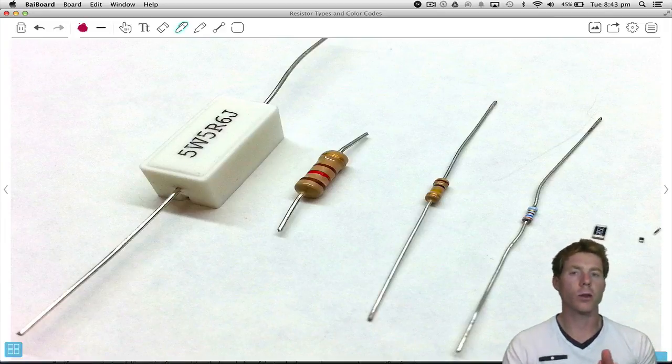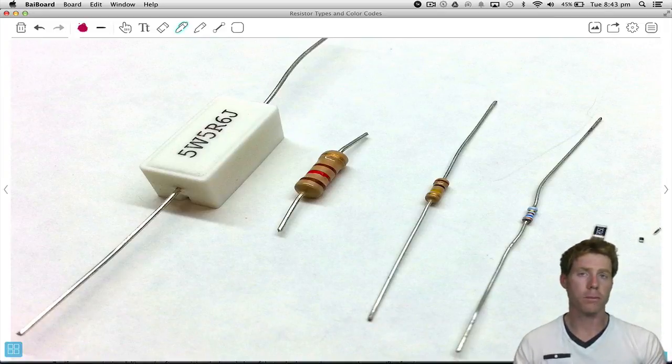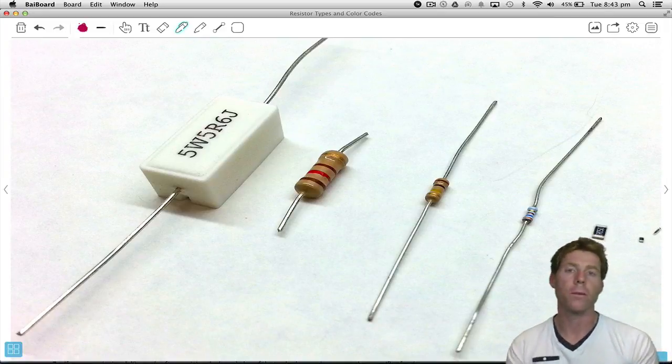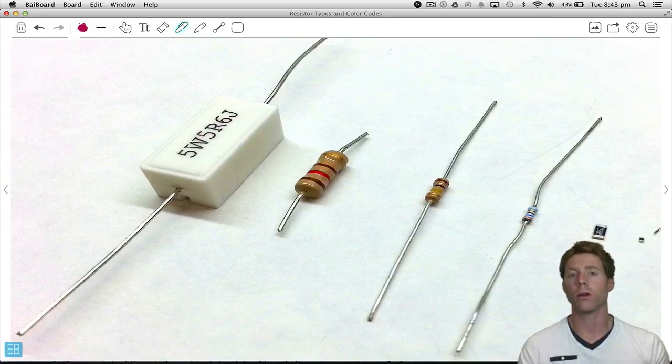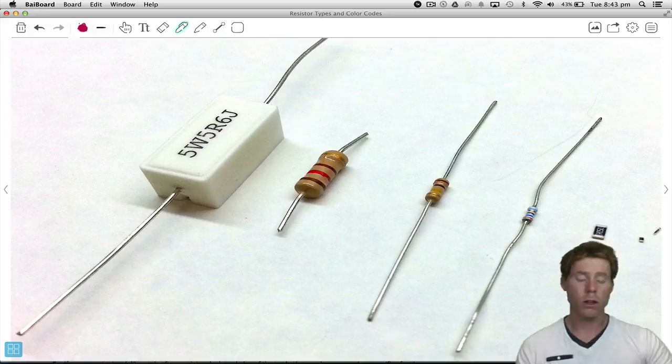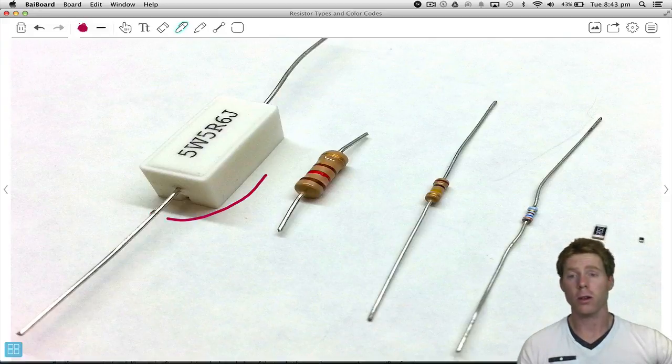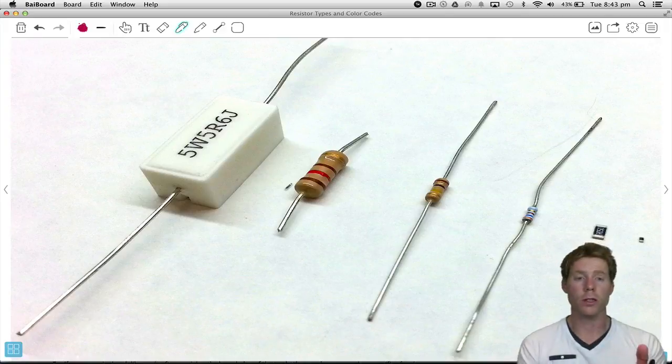Rather the physical size is all about how much power we're going to be using. Now we haven't actually spoken about power before, but if you were to get the voltage across a resistor, multiply it by the current going through it, that will tell you how much power it is using. If we're going to be using a lot of voltage with a lot of current, you're going to be using a lot of power. Therefore you need a big resistor. A small resistor would just heat up too much and it wouldn't be able to handle it.